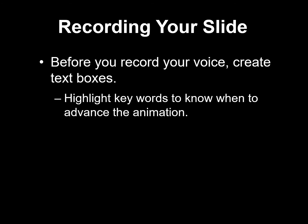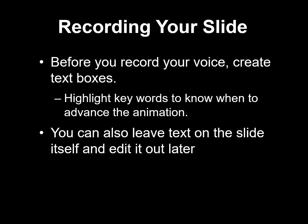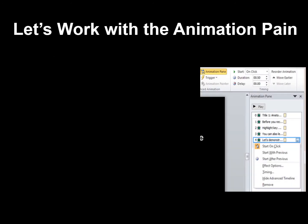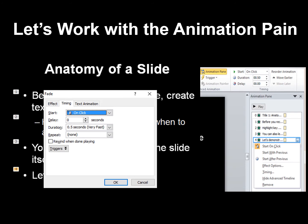You want to highlight keywords to know when to advance the animation, and you can also leave text on the slide itself and then edit it out later on. On the animation pane, click the 'let's demonstrate' line of text. Next, click timing and we can choose how the line of text will appear, how fast, and if there will be any delays. I've set it to appear when I click my mouse and have it appear in half a second, which is very fast.